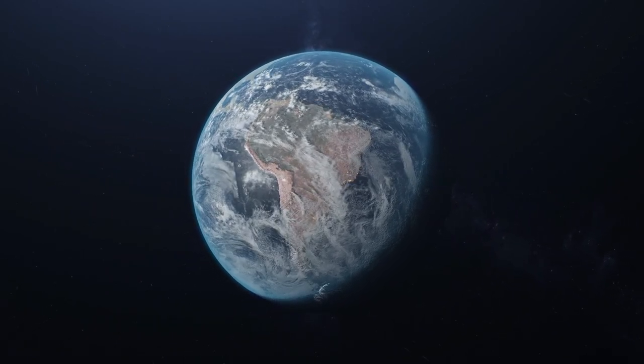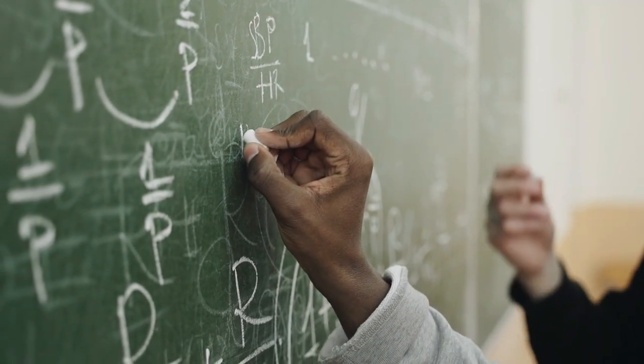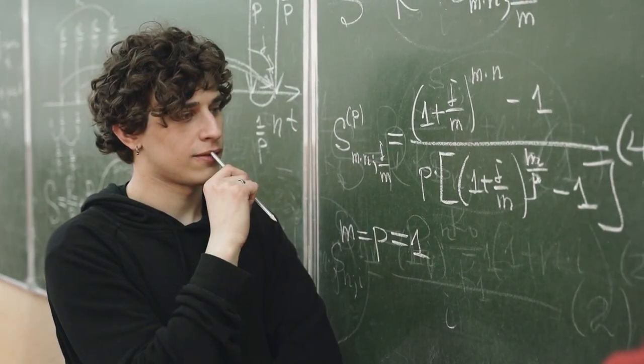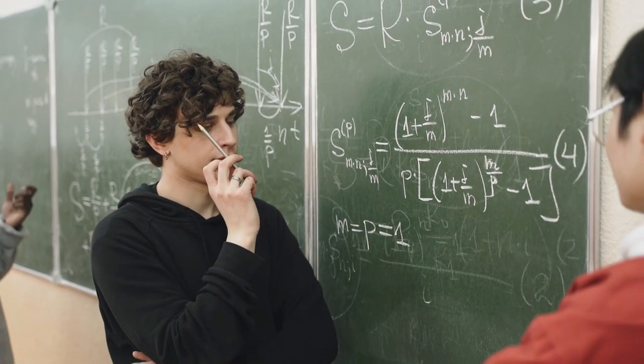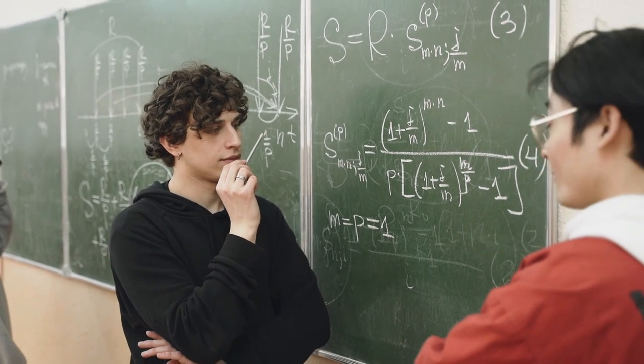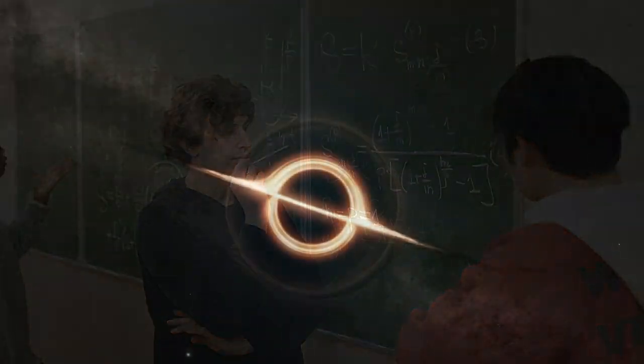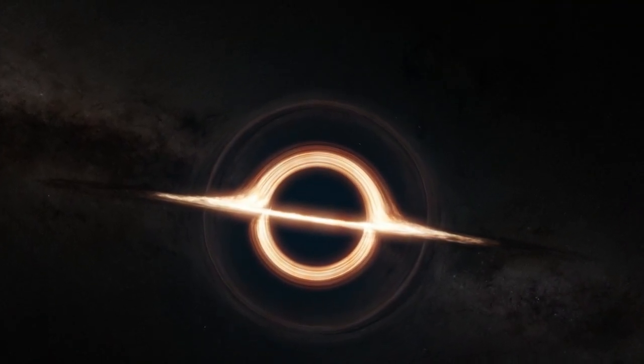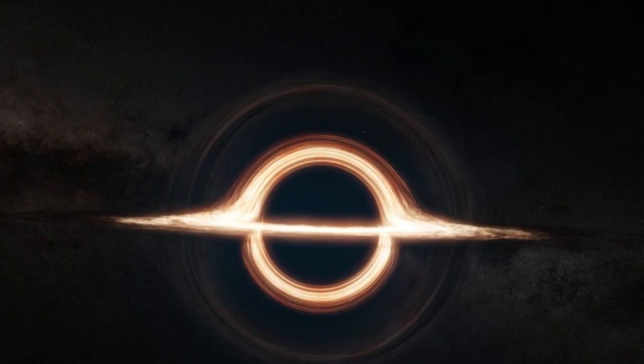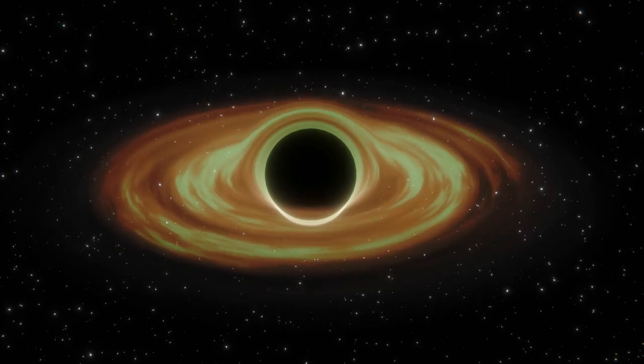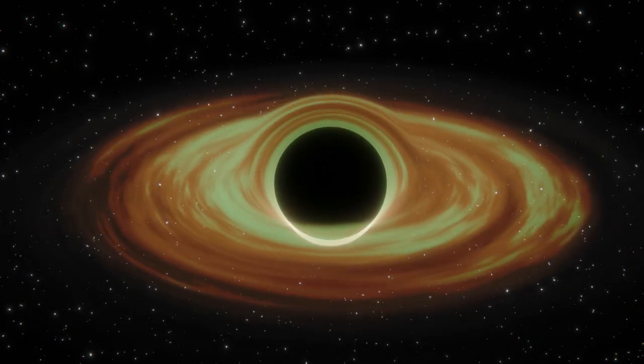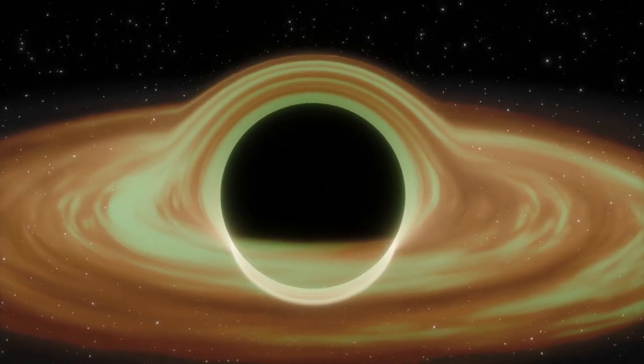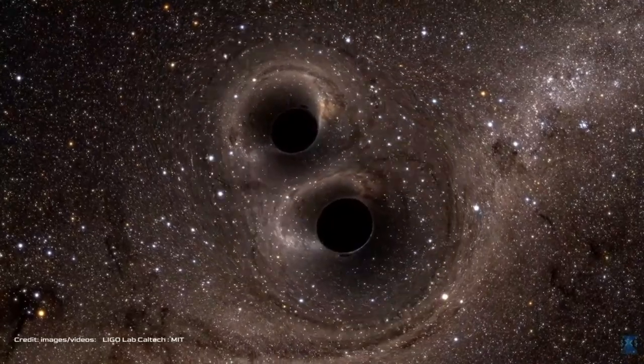It also shows that Einstein's field equations are correct and could predict the behavior of gravitational waves. Moreover, it shows that some of the predictions of general relativity that were previously untested or inaccessible are now observable and verifiable. For example, the existence of black holes with a boundary called the event horizon, which marks the point of no return for anything that falls into them and a singularity at their center, where space-time becomes infinitely curved and density becomes infinitely high. Black holes are expected to emit gravitational waves when they merge with other black holes or other compact objects, such as neutron stars.